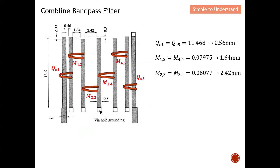Summarizing the design data: the gap for Qe1 is 0.56 mm at input and output (symmetric). The gap for M12 and M45 is 1.64 mm. The gap for M23 and M34 is 2.42 mm. The resonators are short-circuited via a via hole drilled through to the ground for microstrip. The resonator length is a quarter wavelength with respect to the mid-band frequency of the passband.